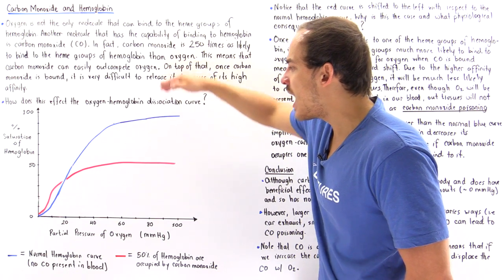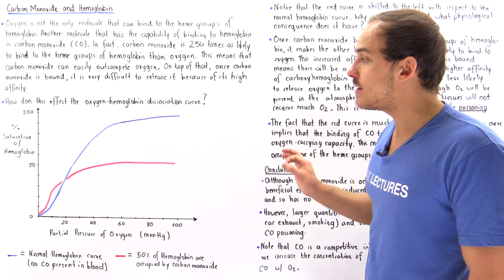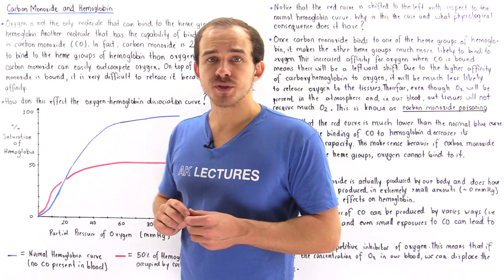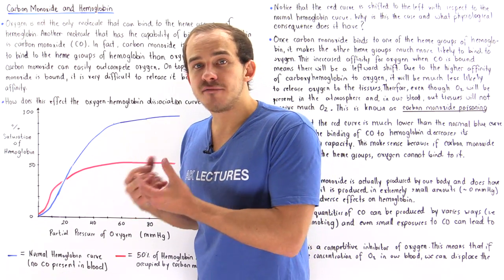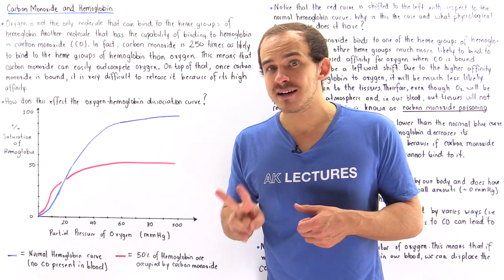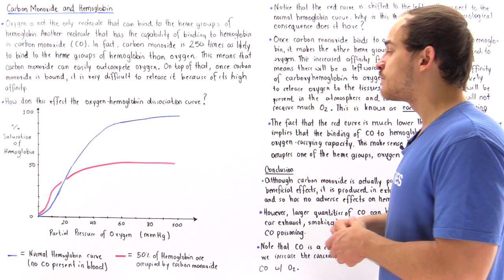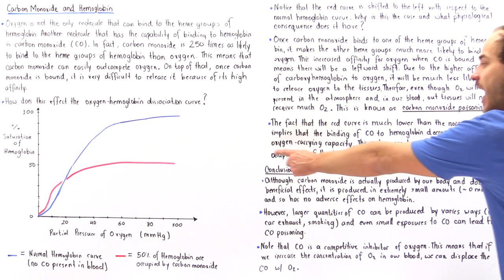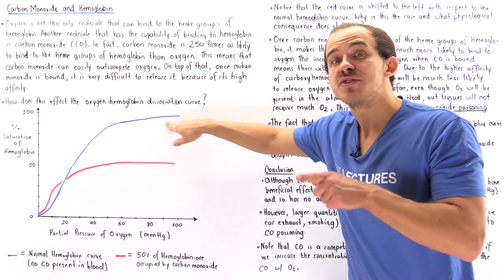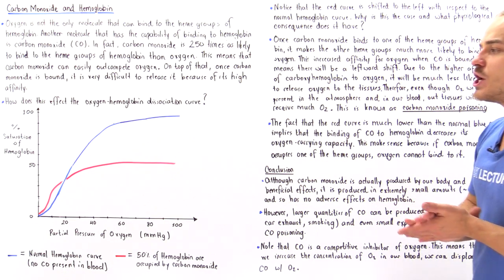The other effect that the binding of carbon monoxide has on the hemoglobin curve is the following. Notice that the blue curve is found much higher than the red curve — there is a drop in our curve. Basically, once carbon monoxide actually binds onto one of the heme groups of hemoglobin, it decreases the amount of oxygen that the hemoglobin can actually bind. For example, if a given hemoglobin molecule is bound to two carbon monoxides, that means only two oxygen molecules can actually bind onto the hemoglobin versus the four oxygen in the normal case. This decreases the oxygen-carrying capacity of the hemoglobin inside our blood plasma, and that's why we have the drop in this curve. Because of this decrease in oxygen-carrying capacity, less oxygen will ultimately be delivered to the tissues of our body.